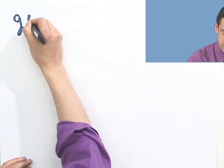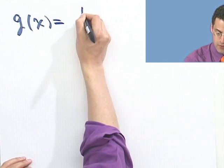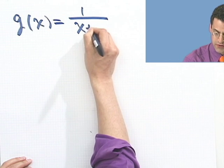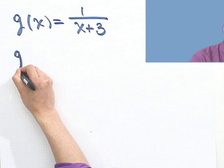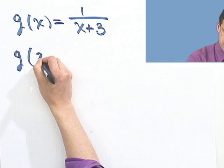How about if I give you this function, g of x equals 1 over x plus 3? So there's a new function. Now let's evaluate this in a few places. What's g of 2?